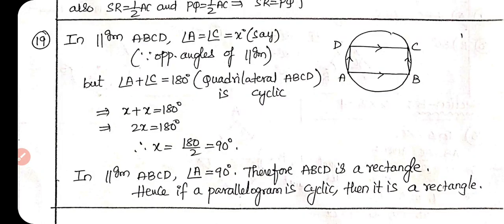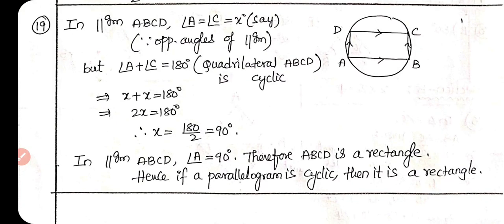Question 19: In a parallelogram ABCD, angle A = angle C (opposite angles). Let angle A = x. Since ABCD is a cyclic quadrilateral, opposite angles sum to 180 degrees: x + x = 180, so 2x = 180, x = 90 degrees. Hence each angle is 90 degrees, and ABCD is a rectangle. Therefore, if a parallelogram is cyclic, it is a rectangle.